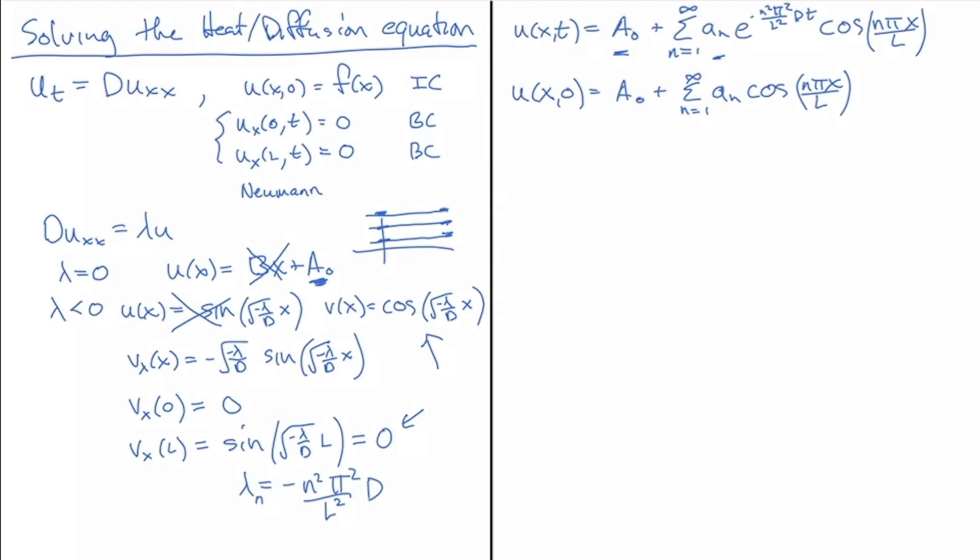And so, now what we have to do is set this equal to f(x). So, basically, we have to find a Fourier series for f(x) in terms of cosines. In a separate video, I'll go over how to calculate the coefficients for a cosine series like this, as well as cover a couple other boundary conditions and how to handle those cases as well.